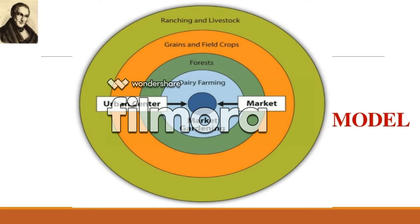The second ring of the model is dairy and market gardening. These two things must be close to the city center since their shelf life is short, and must be readily available for the people of the city. Land here costs much more than places farther away from the center, so you may see dairy farmers with only a small amount of land.